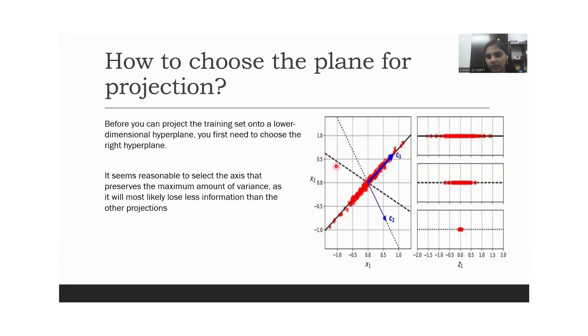Then the dashed axis will conserve the next most variance. So we will use this as the next PC. And then the dotted line will be considered as the third.